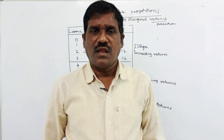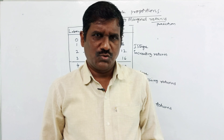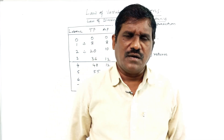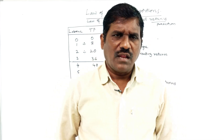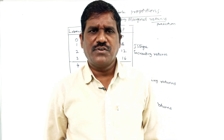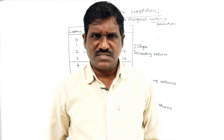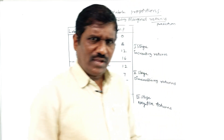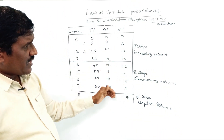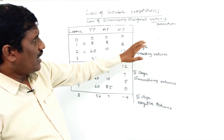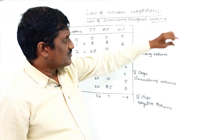We are discussing the law of variable proportions, which is Part 2. Already we discussed what is the law of variable proportion and what is the law of diminishing marginal utility.